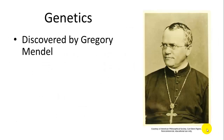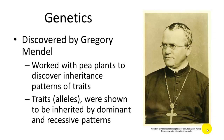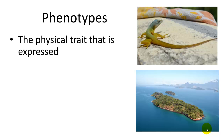Gregor Mendel was the one who then discovered this idea of genes and genetics. He used pea plants to talk about dominance and recessive traits and was able to experimentally show the probabilities and work them out according to inheritance patterns, as opposed to just randomness. Traits, or alleles, were shown to be inherited by dominant-recessive patterns — that was Mendelian genetics.